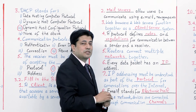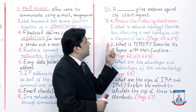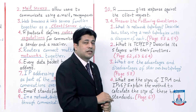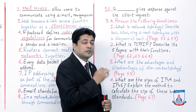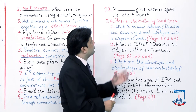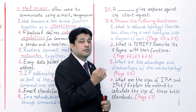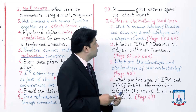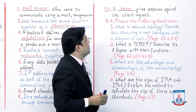Number 10: A dash gives response against the client request. I mentioned earlier — when you see 'client' in a statement, check whether the answer involves 'server.' On a network, the one who requests is the client and the one who responds is the server. Here it asks what gives a response — straight forward, that is the server. A server gives response against the client request.